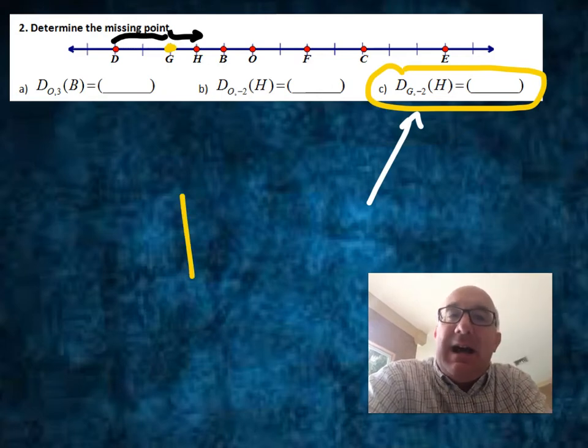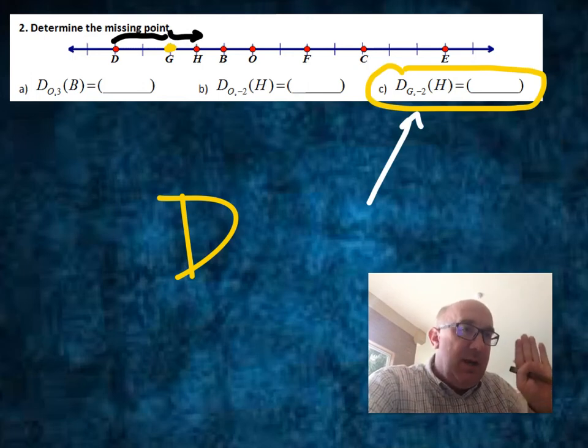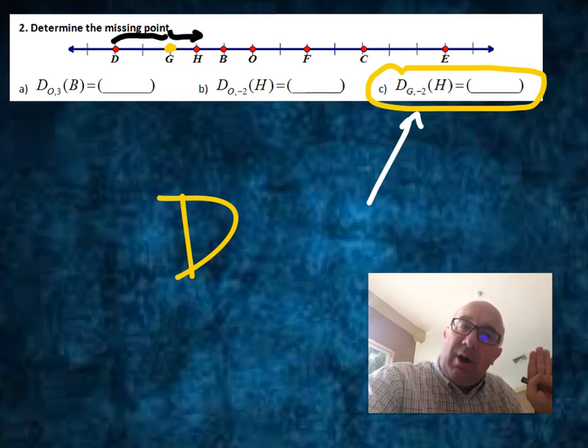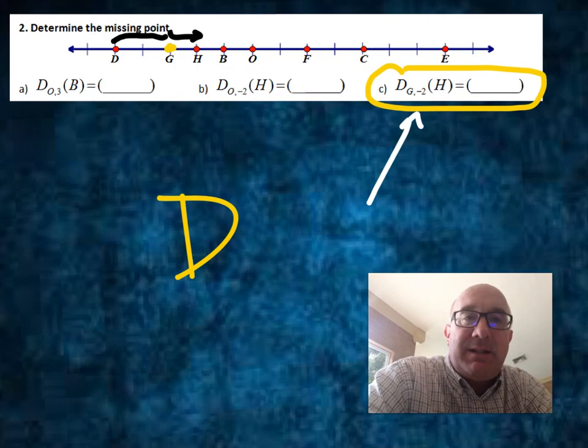And D, I believe, is going to be our answer. Because, again, think of it this way: from G, our center of dilation, H is a distance of 1. So if you want to go in the opposite direction, you've got to go 2 the other way. Makes sense, doesn't it?